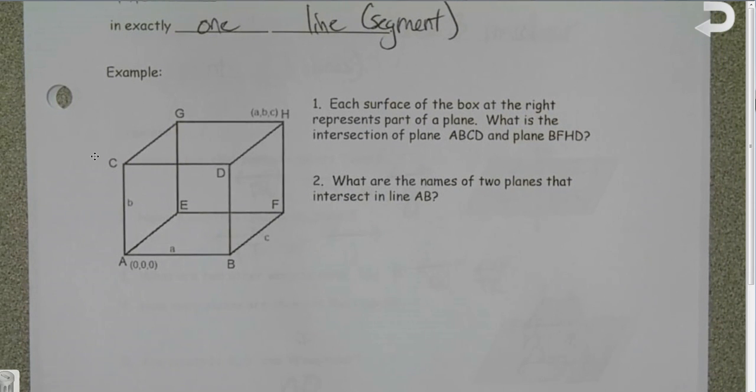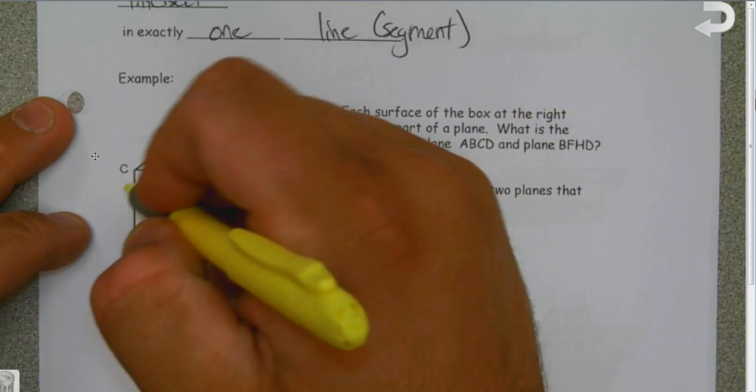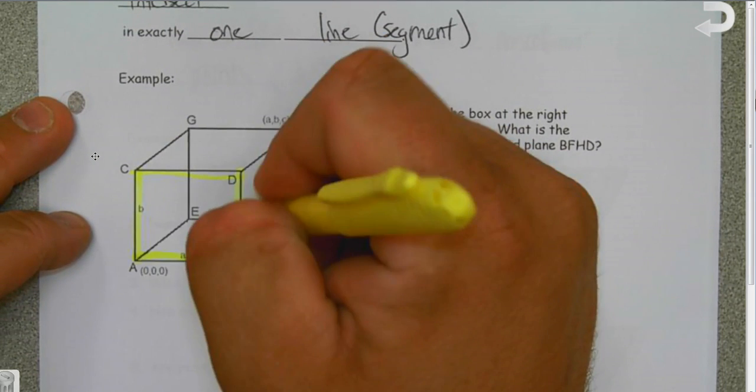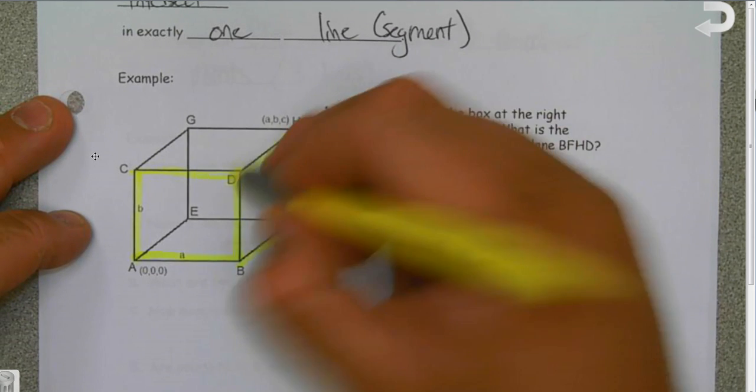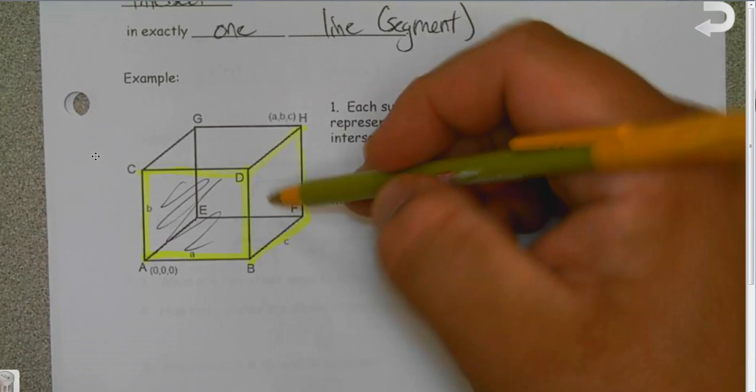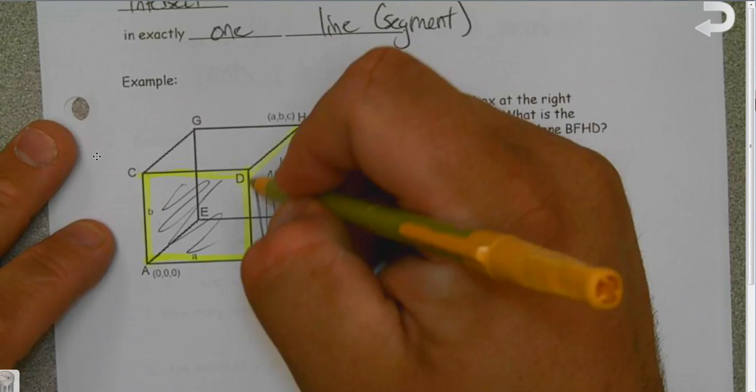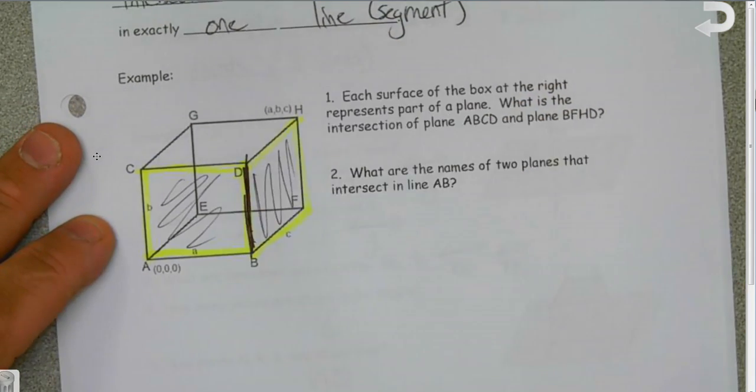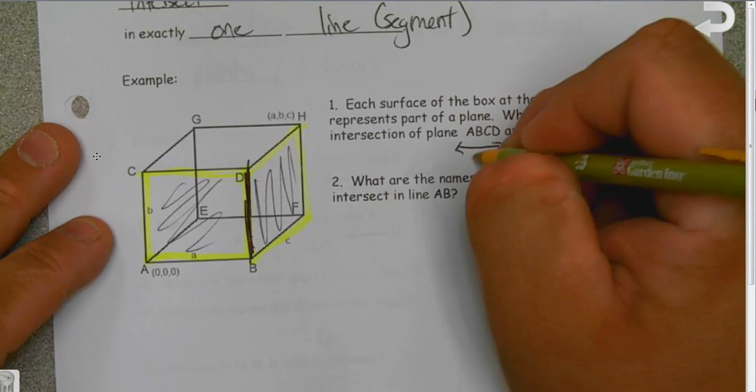Let's talk about what that looks like. Each surface of the box at the right represents part of a plane. What is the intersection of plane ABCD and plane BFHD? This is a good time to have a highlighter. This is how I handle questions like this: plane ABCD and then plane BFHD. If you look carefully, you can see that we're talking about this box and this box. So what is the edge where these two boxes meet up? Well, it's right here at BD, and so we would say that these two planes intersect at line BD.